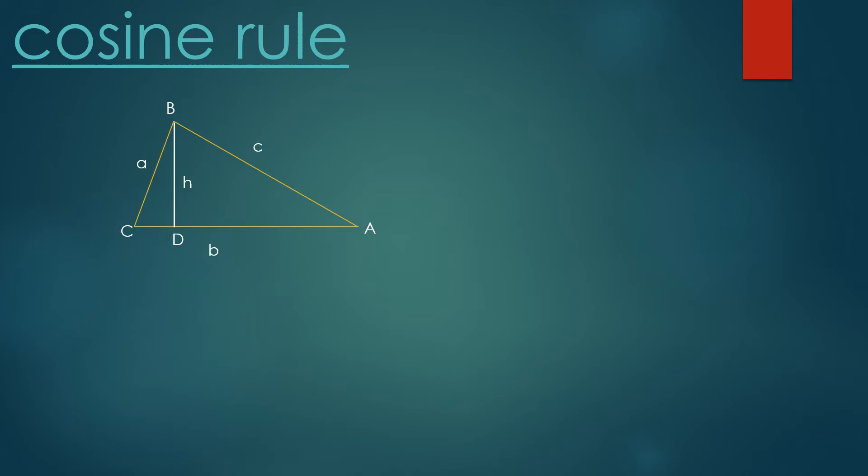Now let's look at triangle BCD. I can write cos C = CD/a, or CD = a cos C. Now look at this base. I can get DA as b - CD, or b - a cos C. We call it relation one.